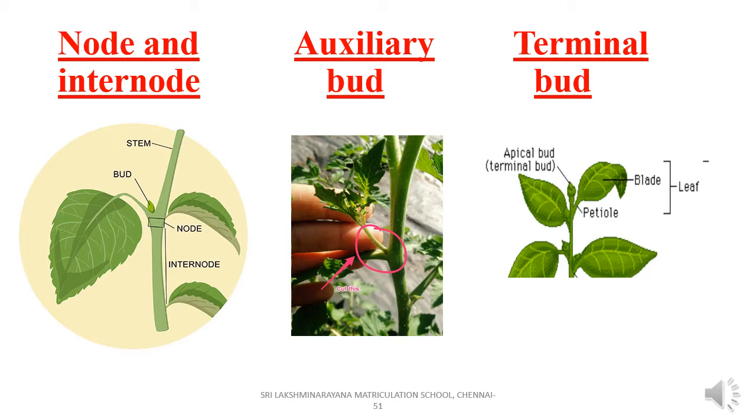A bud that forms at the tip of the stem is called an apical or terminal bud.